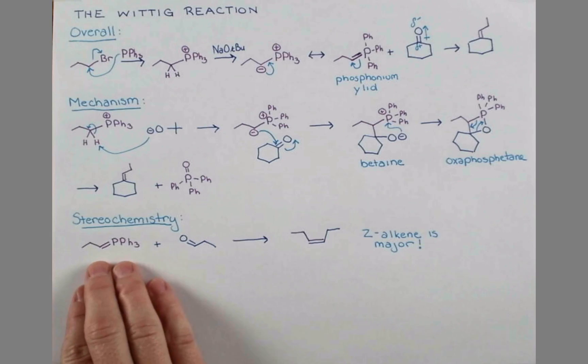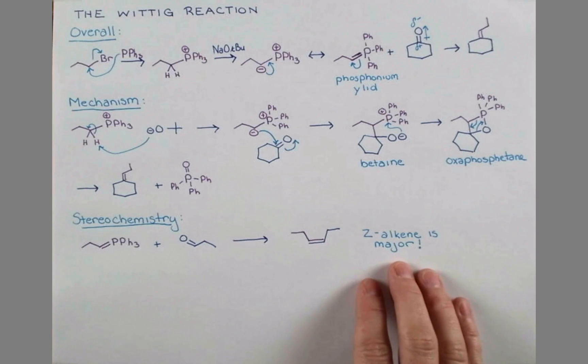Now this ylid is called an unstabilized ylid. And I'll show you why in just a second. That will produce the Z-alkene as the major product. But there are certain substrates that actually favor the E-isomer in a Wittig reaction. Let's look at an example, the mechanism, and see why they're different.